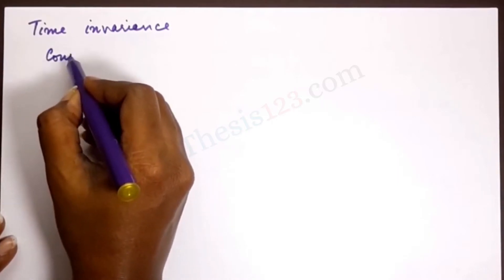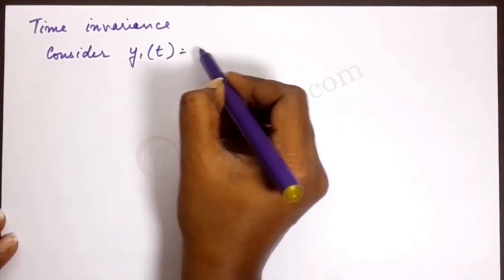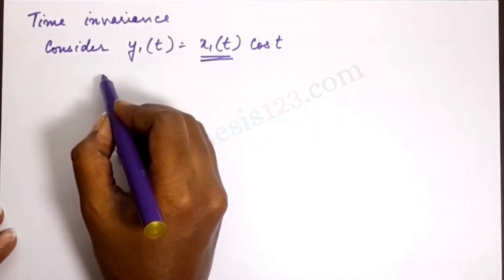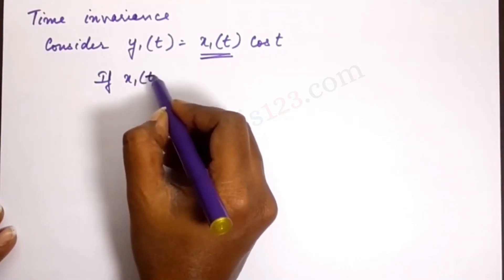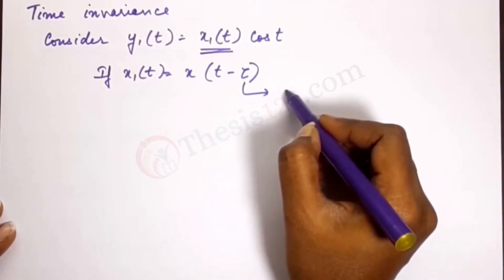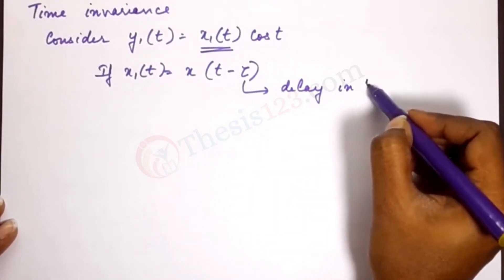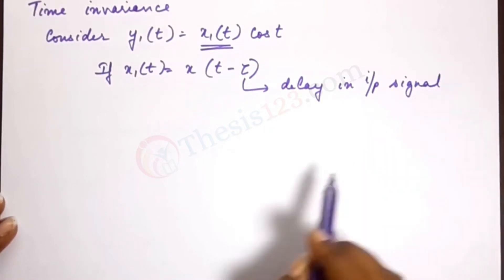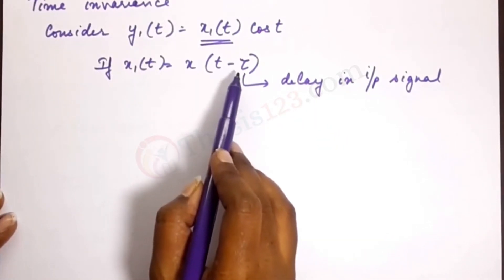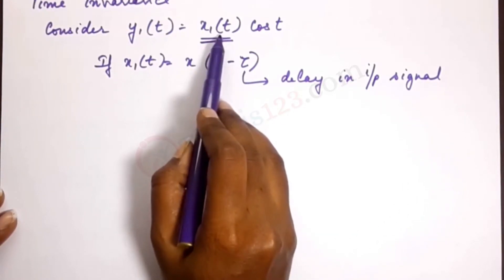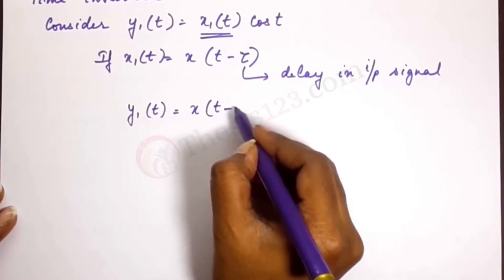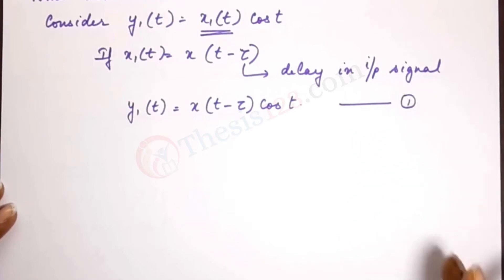Let's consider y1(t) = x1(t)·cos(t). Now, if the input x1(t) is given a delay τ, so x1(t) = x(t − τ), where τ is the delay in the input signal. Substituting, the output becomes y1(t) = x(t − τ)·cos(t). Let's call this equation 1.